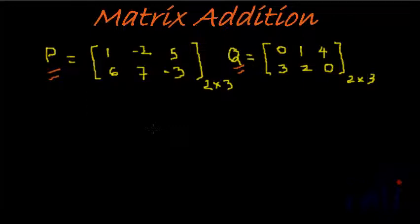The first rule is that the order of the matrices that need to be added together has to be the same. Remember when we did the equality of matrices, we said there are two conditions if a matrix has to be equal. First, the order should be same, which means both matrices should have the same number of rows and same number of columns.